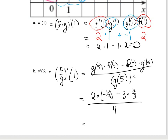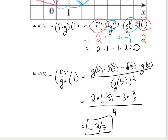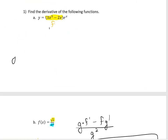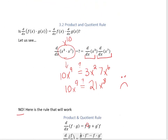Simplifying that out gives us negative 2 thirds. So remember: if you are multiplying or dividing, you can't just take the derivative of each piece and multiply or divide them. You have to stick to these rules — the product rule and the quotient rule.